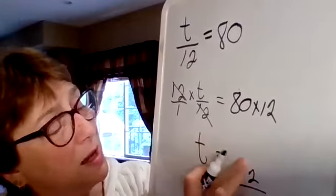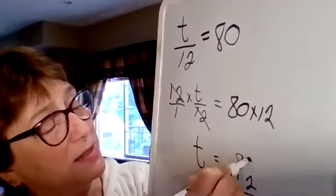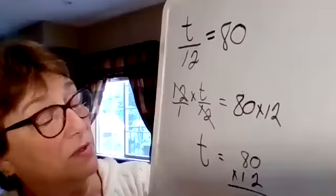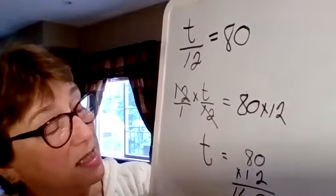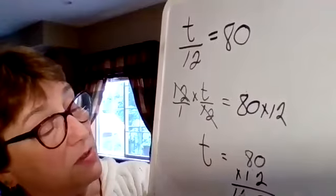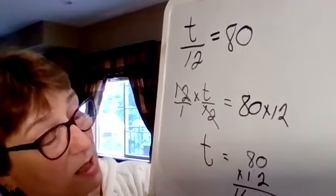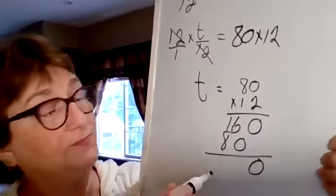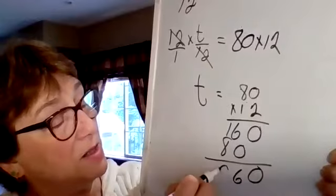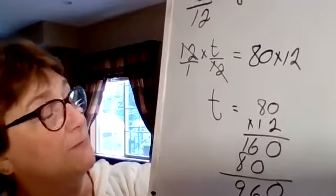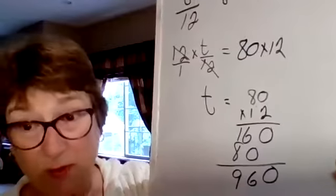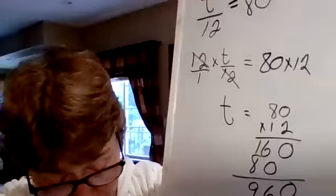And then on this side, we have the 80 times 12. I don't know that off the top of my head. Do you? Use your calculators and I'll figure it out on the paper. Two times zero is zero. Two times eight is 16. One times zero is zero. One times eight is eight. 960. Is that what you got? So we're good.